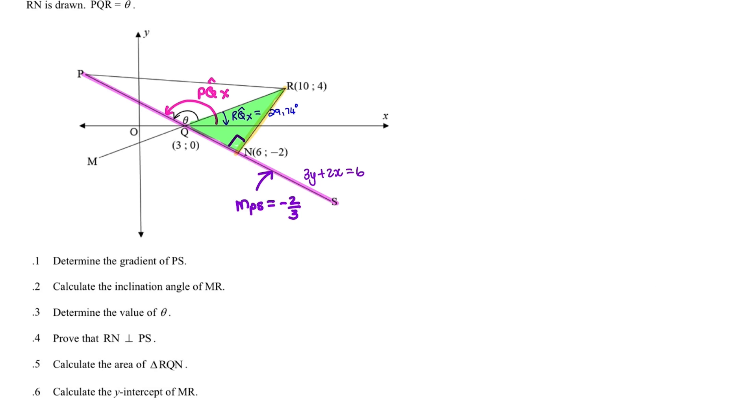Our last question is to calculate the y-intercept of the line MR. So we want to find the coordinates where the line MR meets the y-axis. So in a previous question, we have already calculated the gradient of the line MR, and that gradient was 4 over 7.